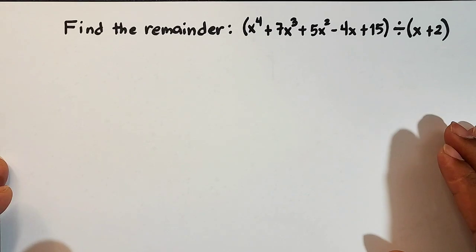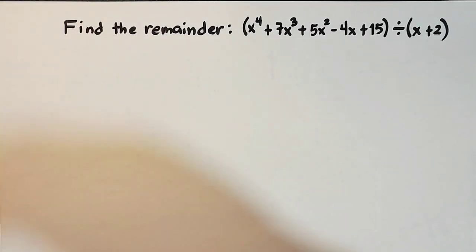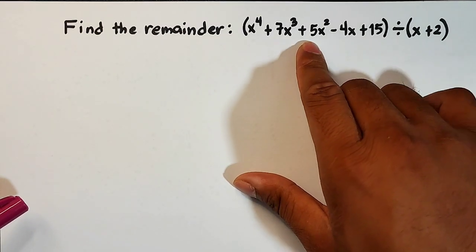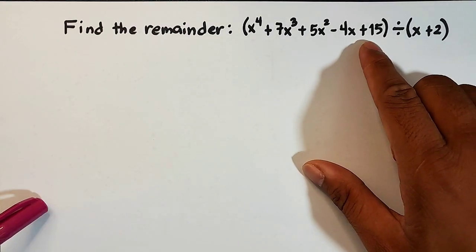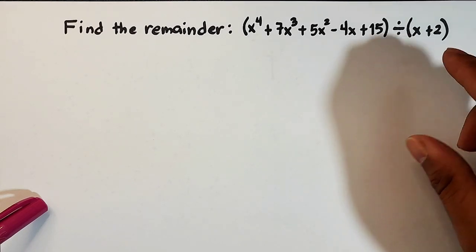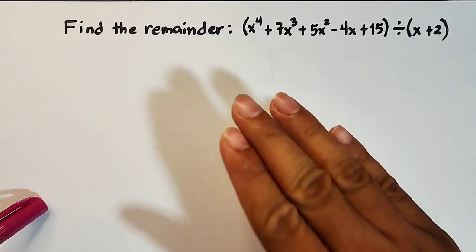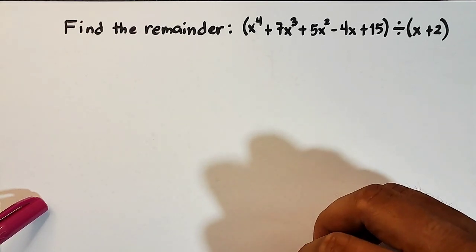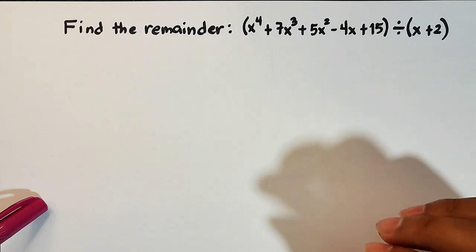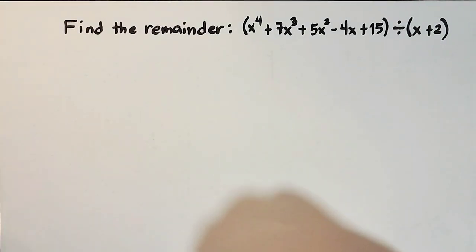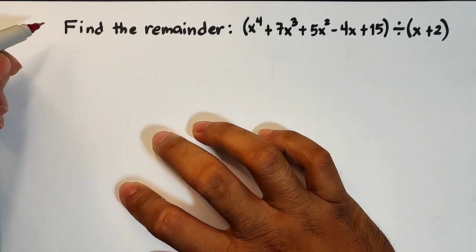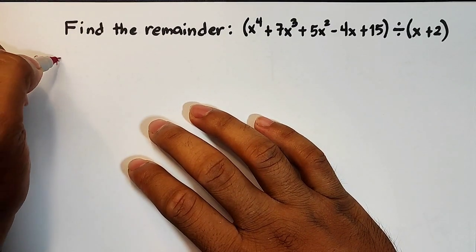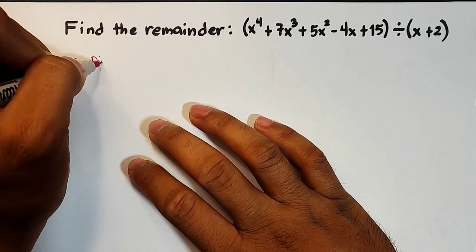So what we have here is the first problem about the remainder theorem. Find the remainder of x to the fourth power plus 7x cubed plus 5x squared minus 4x plus 15, divided by x plus 2. In this example, let us first try using synthetic division to find the remainder, and later on I will show you how to use the remainder theorem.